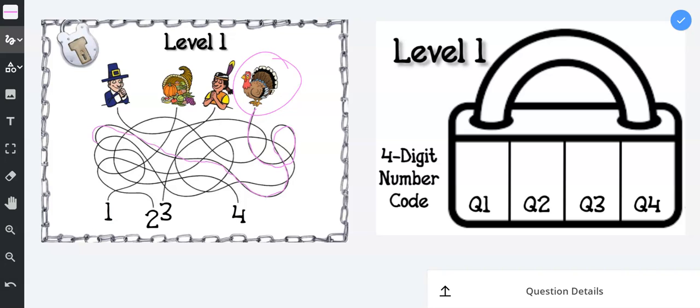So it looks like it goes to number 1. So the turkey was first and the turkey corresponded to a 1. So I know that the first number in my four digit number code is a 1.